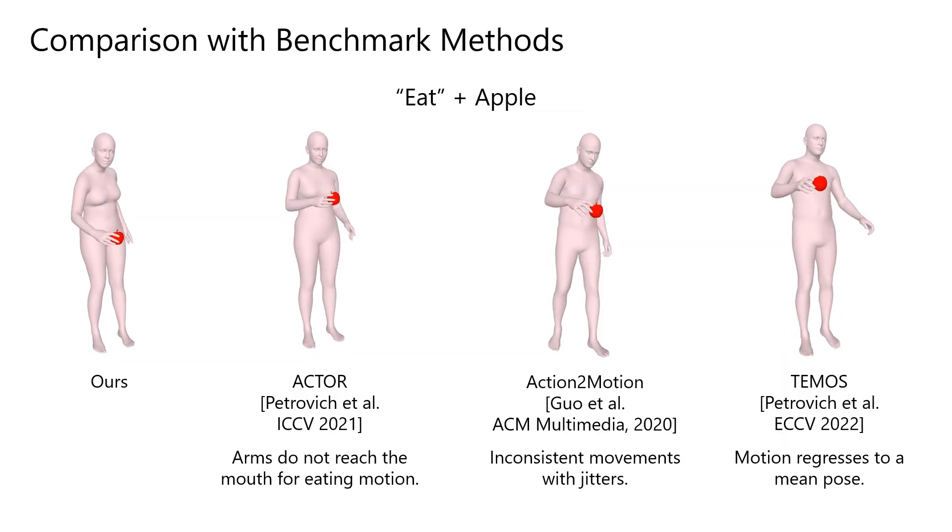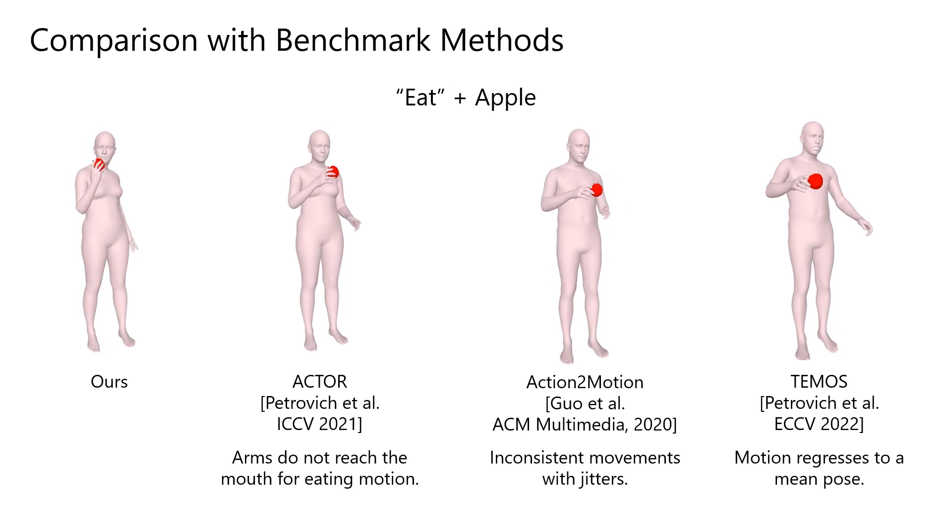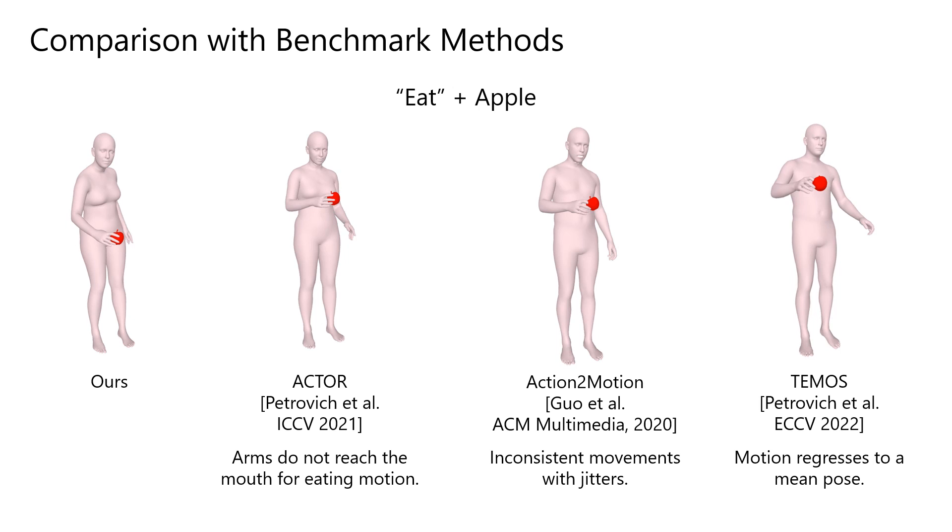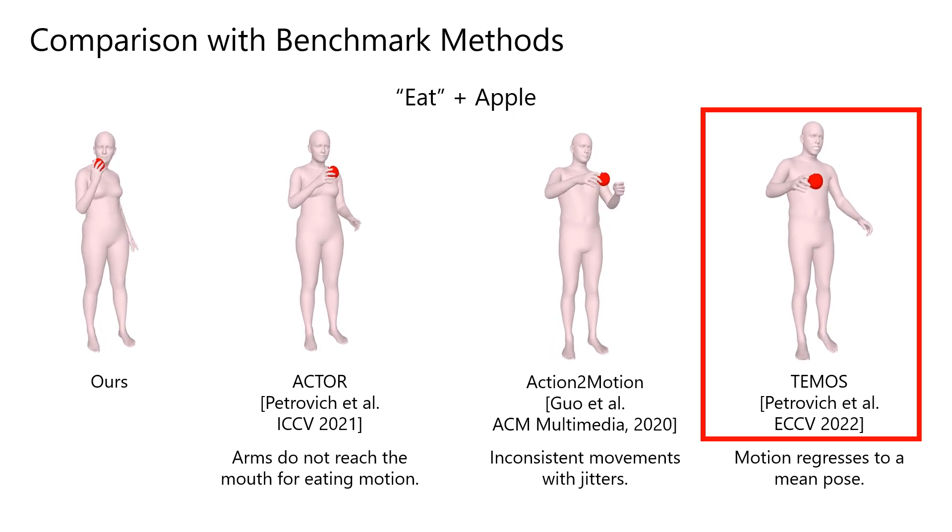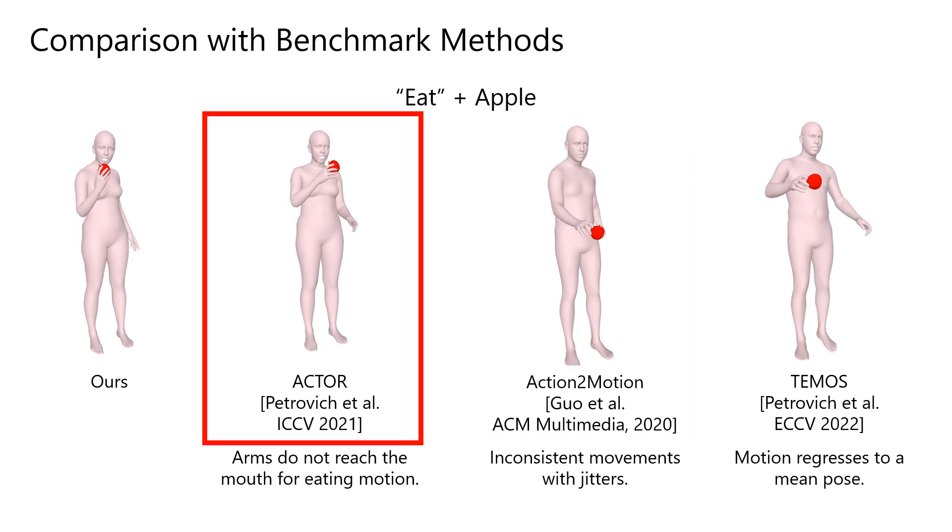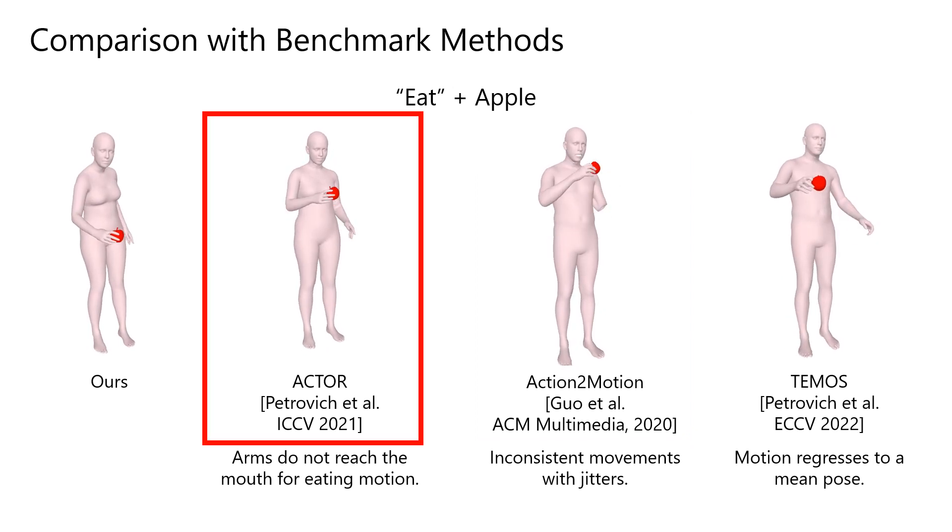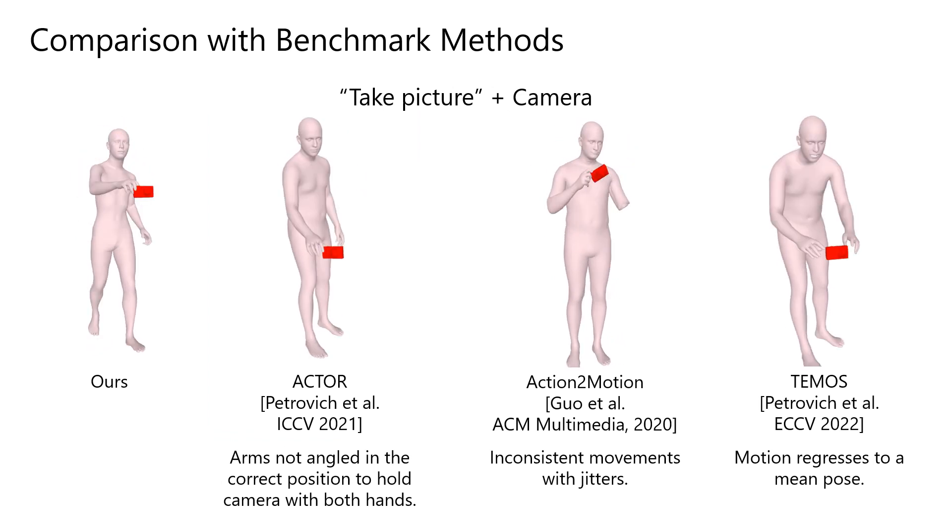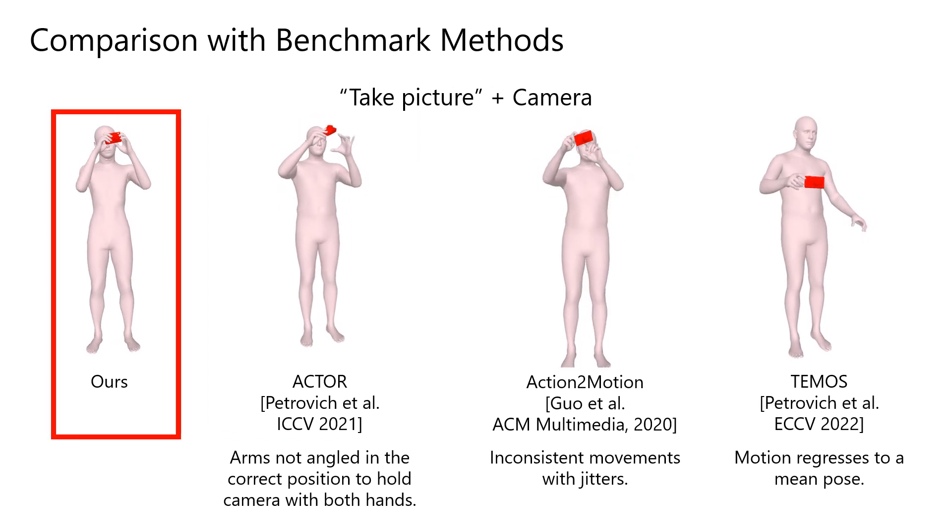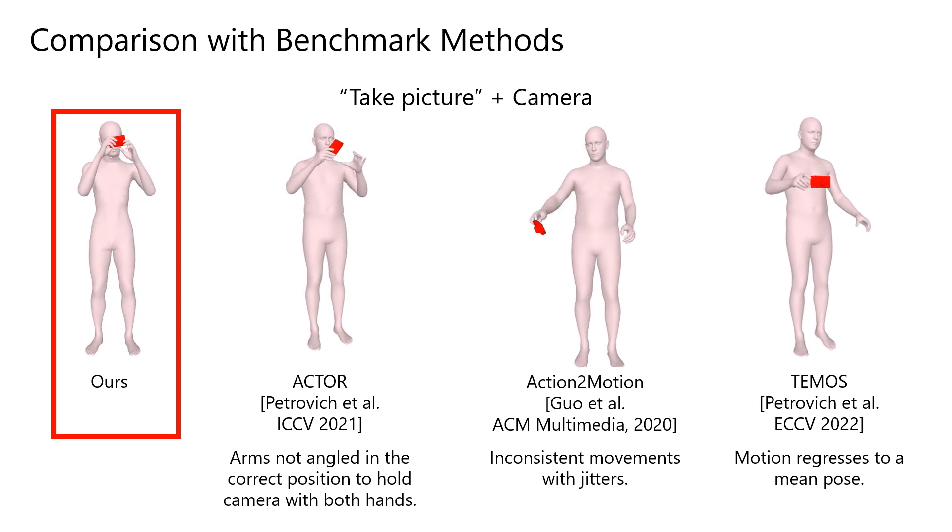We compare our method with benchmark full body action synthesis methods. We find that the competing approaches are either inconsistent, output jittery movements or regress a mean pose. Actor fails to bring the hand all the way to the mouth. When comparing with the benchmarks for both-handed motions, we see our method shows higher accuracy in holding an object with both arms.